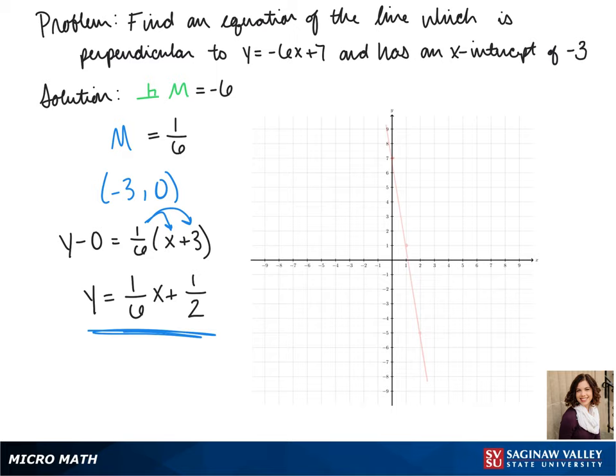Here we can see the line perpendicular to it. And then to plot our line we can plot our intercept and then use our slope to find more points. So here's our line.